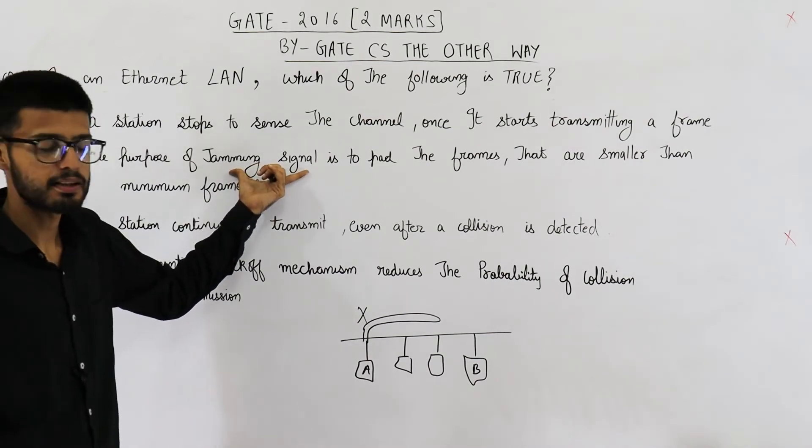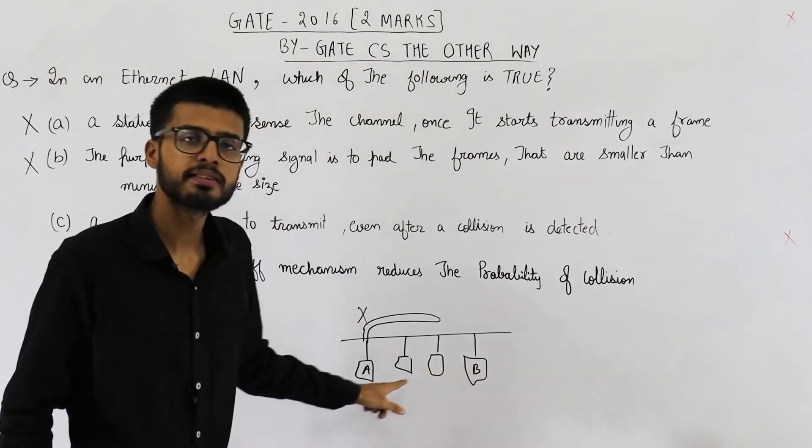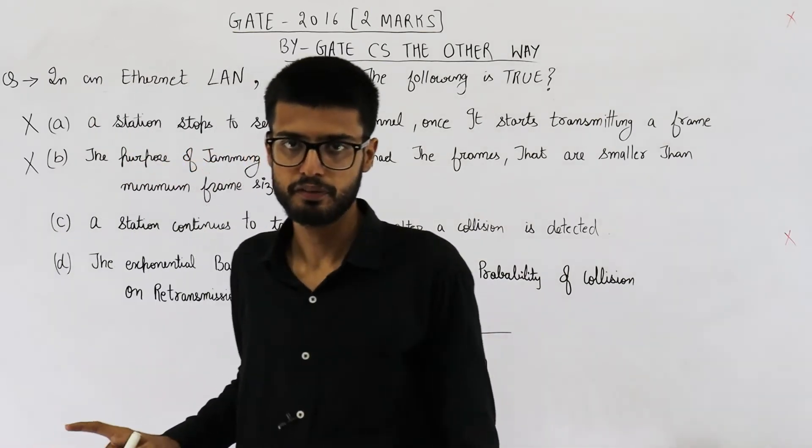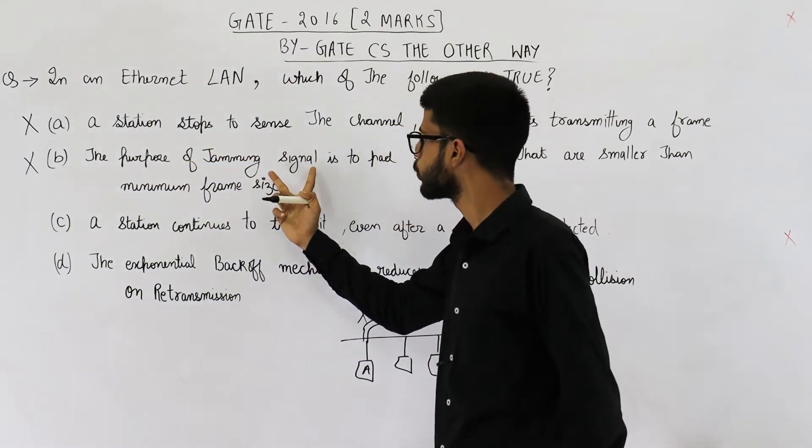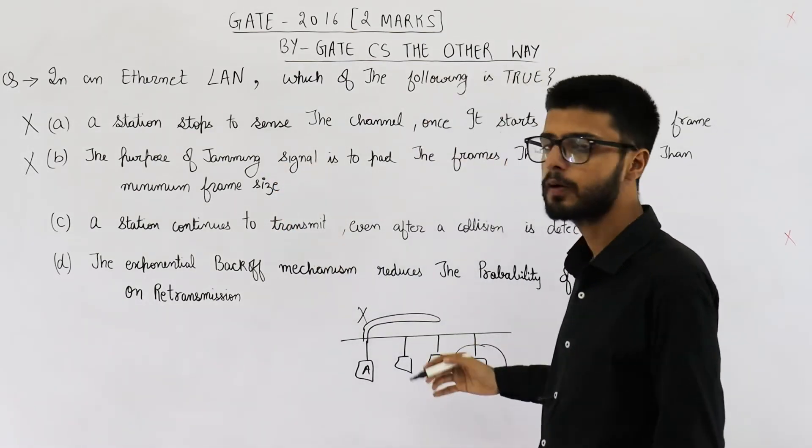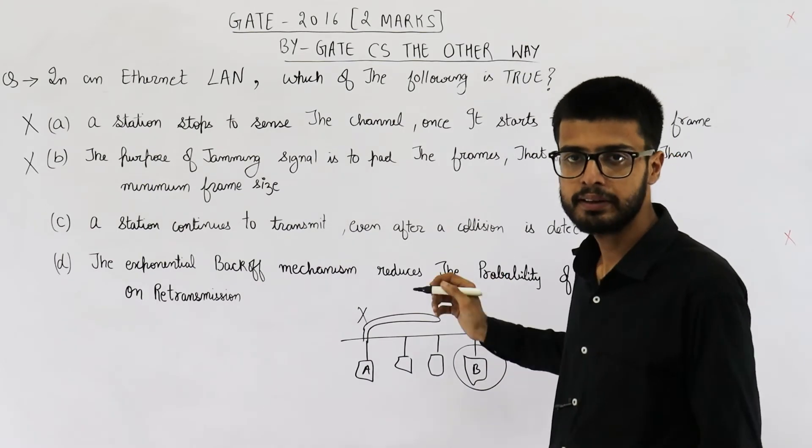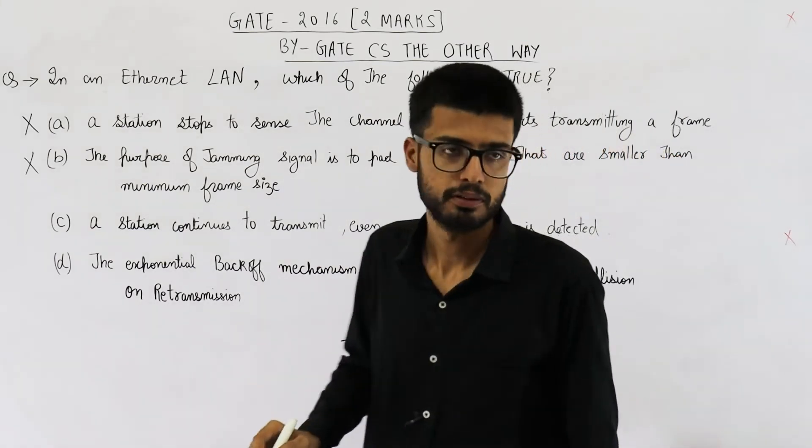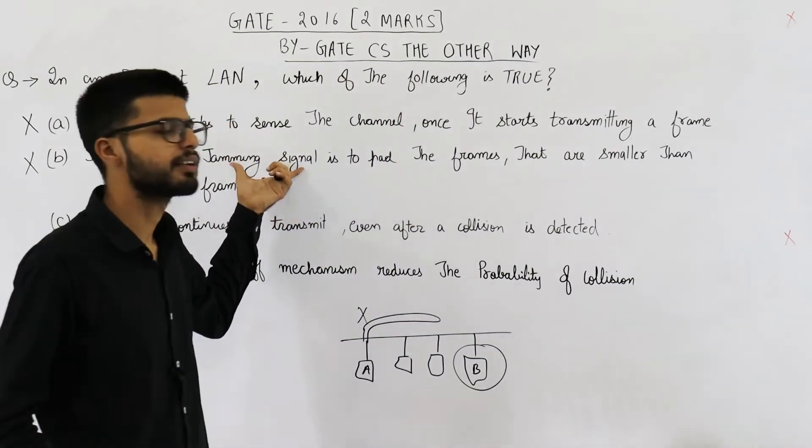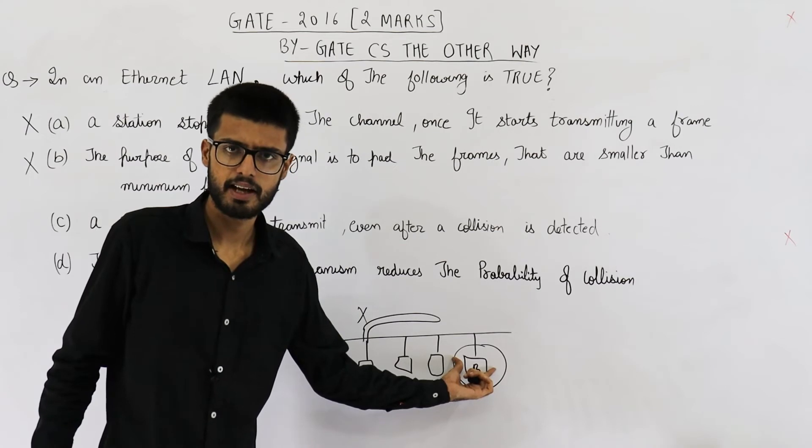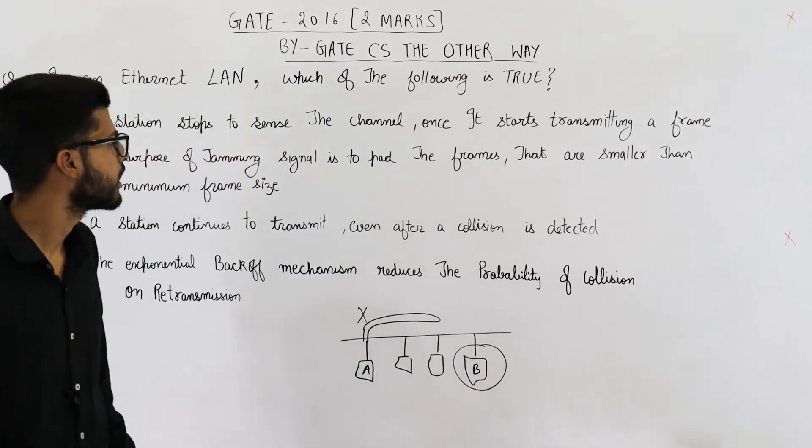The purpose of jamming signal is to inform other stations that there is a collision on the medium. Please don't send any frame. Also, there is one more purpose of sending a jamming signal. Suppose B has received some part of the frame. Then when B will see that there is a jamming signal, B will discard that frame. Actually, this jamming signal contains a CRC error. When B will see that there is a CRC error, B will automatically discard the frame. So option number two is also incorrect.